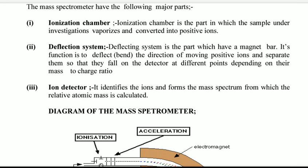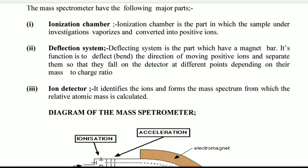The mass spectrometer has the following major parts. The first part is called ionization chamber. As we have defined, mass spectrometer is an instrument which converts molecules into ions, so molecules must be ionized.